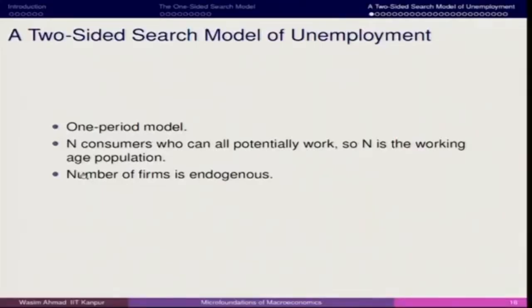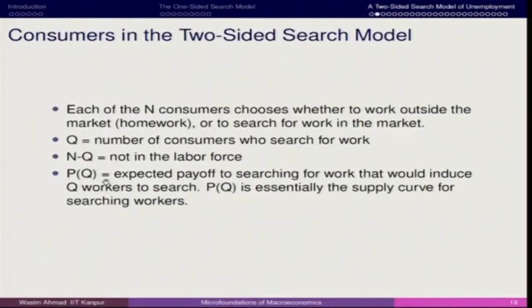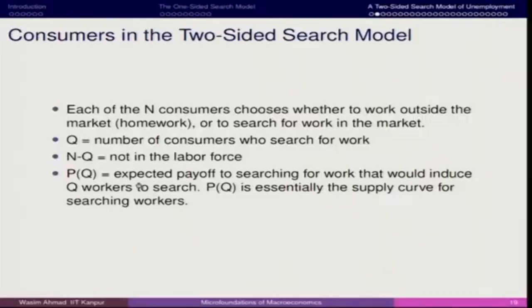We are talking only about those firms which are posting vacancies. If N is the number of individuals looking for opportunity and Q is the number of consumers looking for work, then we are talking about N minus Q — only those individuals who have interest in working and are looking for opportunity. The payoff for the labour supply shows that the expected payoff of searching for work has a positive relationship going up.